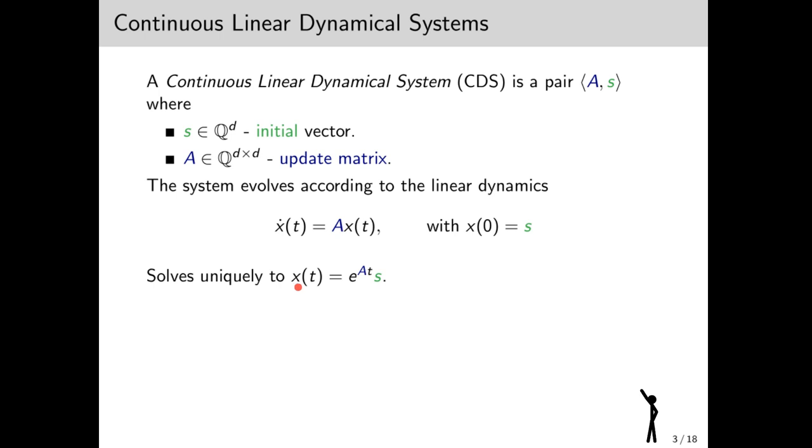In fact, the unique solution is x.t equals e to the Ats. Then, we define the orbit of the system to be the trajectory of the function, that is, all the points it visits. And just a quick reminder, this matrix e to the Ats is defined using the power series of the exponential function. It's always defined and can be fairly easily computed.